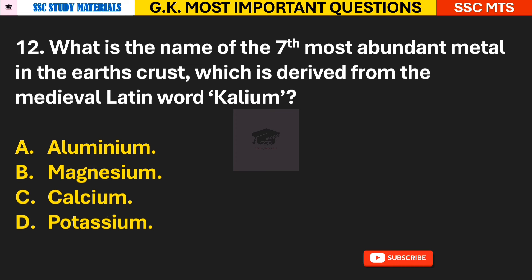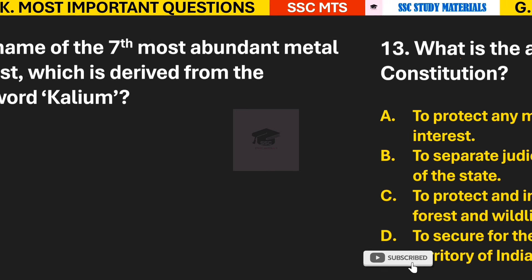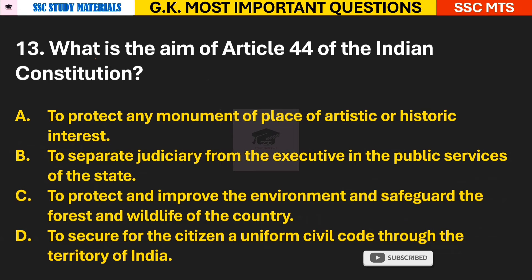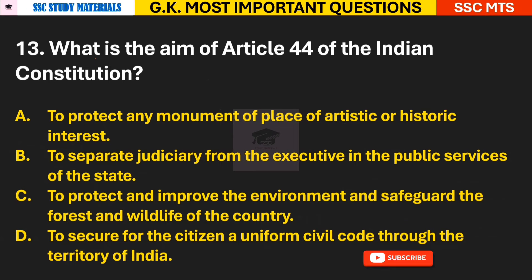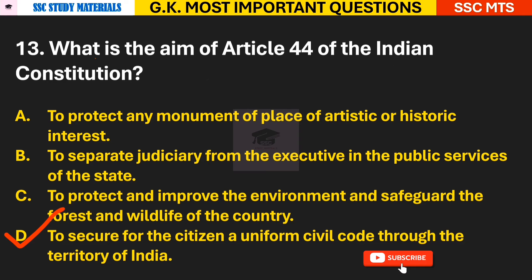Question 12: What is the name of the seventh most abundant metal in the Earth's crust, which is derived from the medieval Latin word 'kalium'? Answer D — Potassium. Question 13: What is the aim of Article 44 of the Indian Constitution? Answer D — to secure for the citizens a Uniform Civil Code throughout the territory of India.